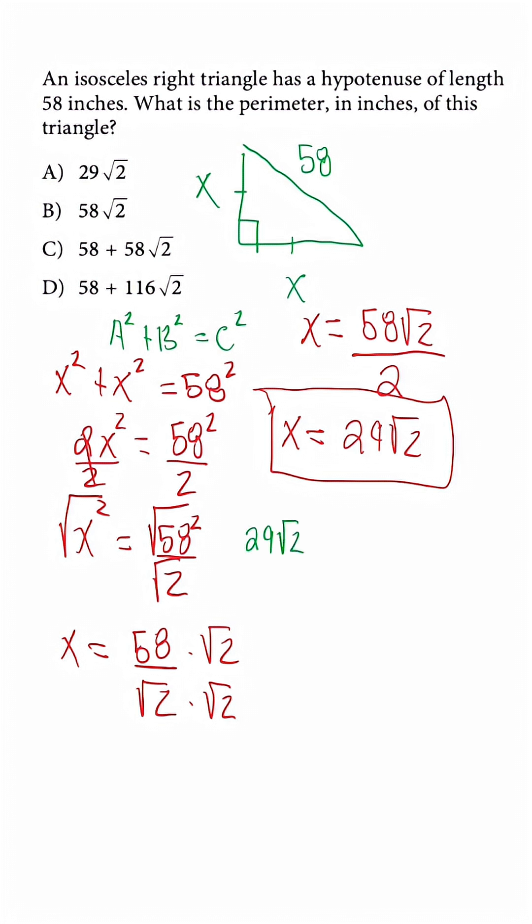So 29 radical 2 plus 29 radical 2 plus 58. When we simplify we're going to get 58 radical 2 plus 58.